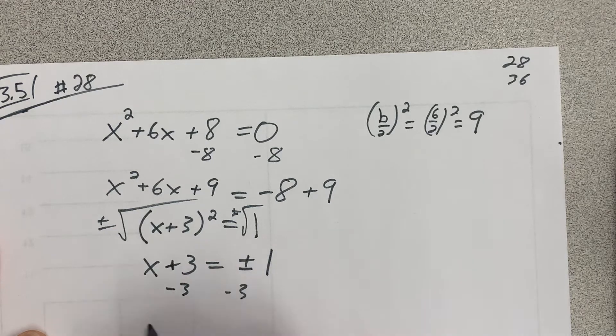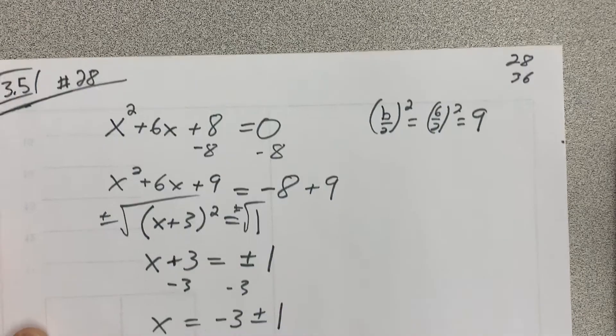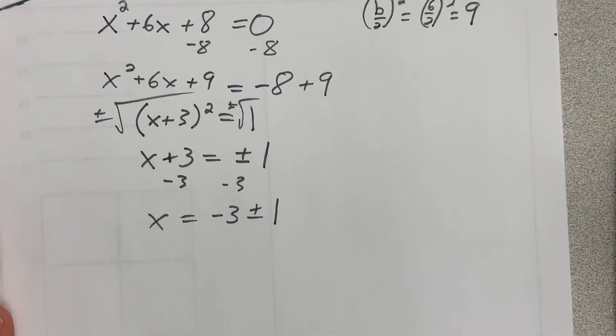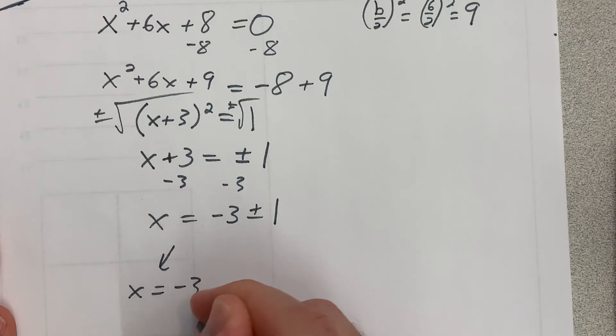Then I'm going to minus 3 to both sides. And I get x equals negative 3 plus or minus 1. Okay, so that's two solutions.